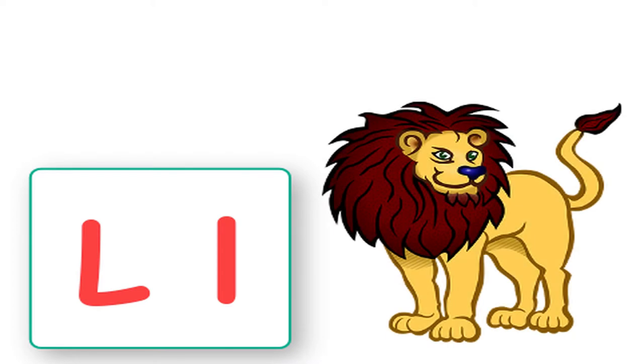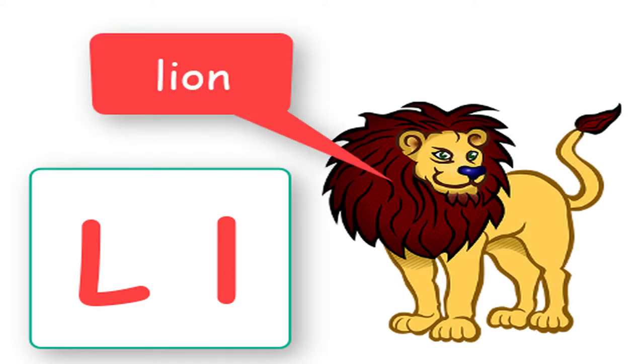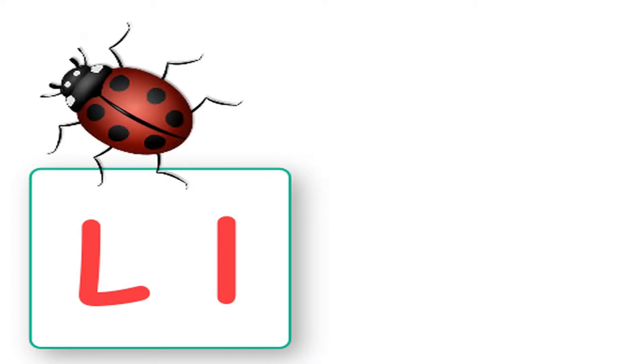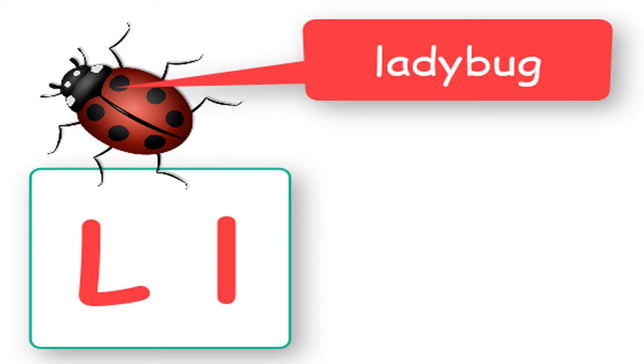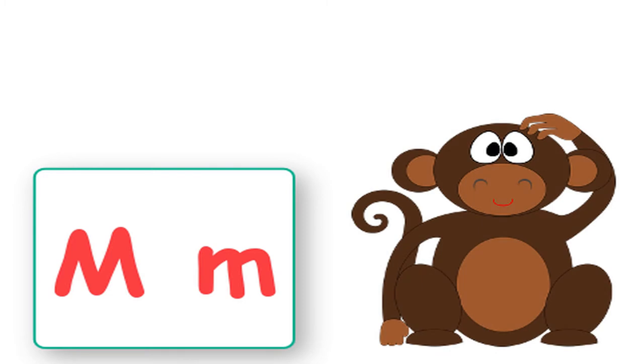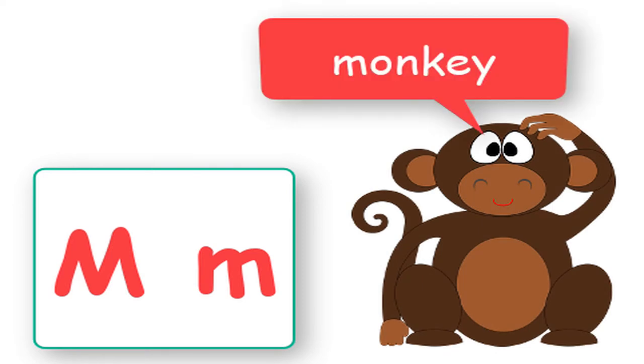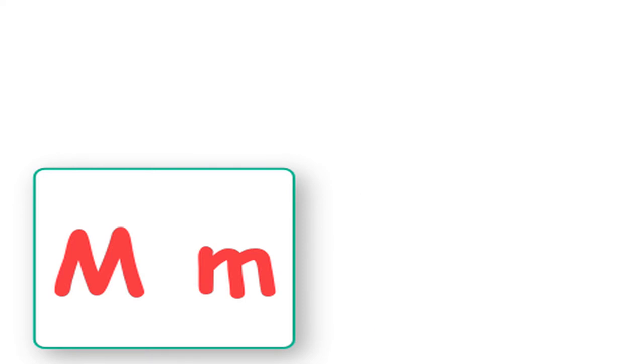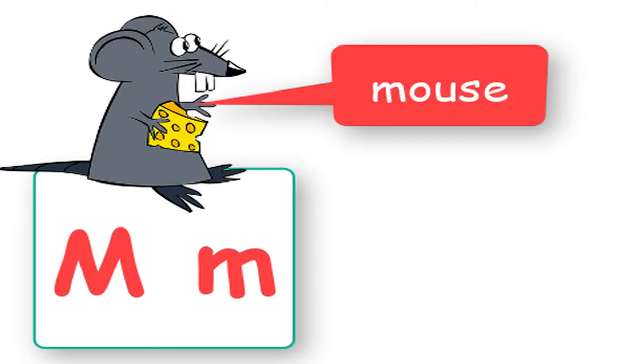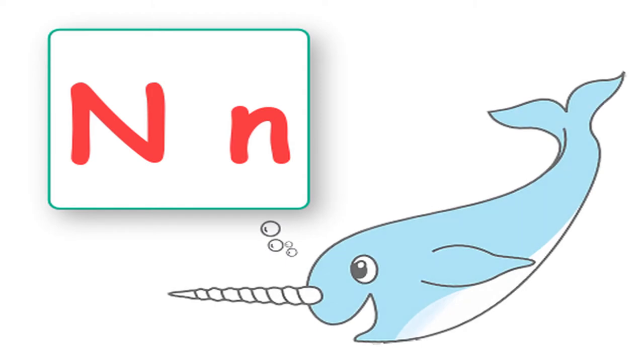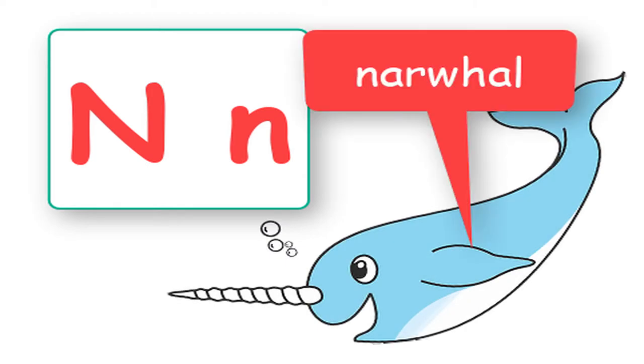L says lion, lion. L says ladybug, ladybug. M says monkey, monkey. M says mouse, mouse. N says narwhal, narwhal. He's like a whale unicorn. Narwhal.